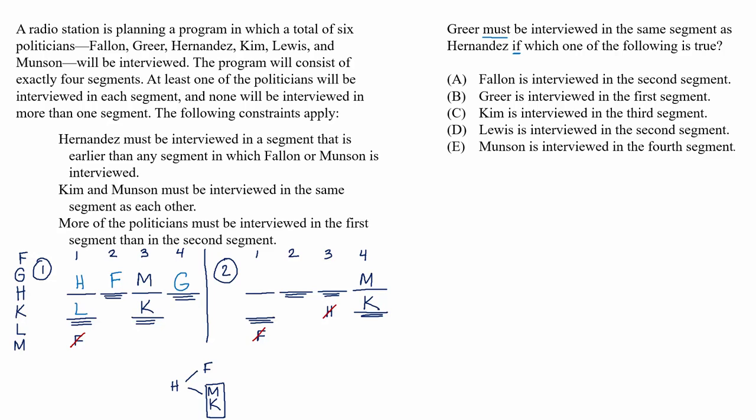B, Greer is interviewed in the first segment. This doesn't force Greer and Hernandez to be together. Take a look at scenario two. If Greer is interviewed in the first segment, it could be alongside Lewis. Then Hernandez would be second and Fallon would be third. There's no problem here, so this isn't our answer because Greer and Hernandez aren't interviewed together.